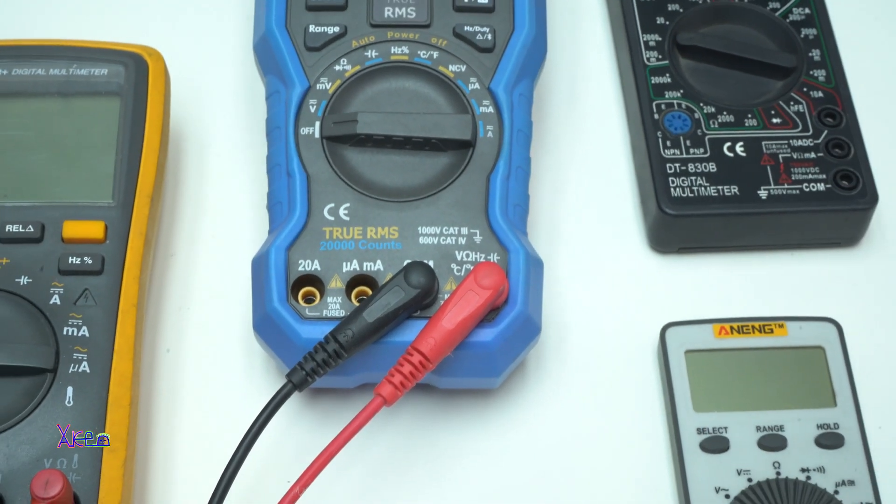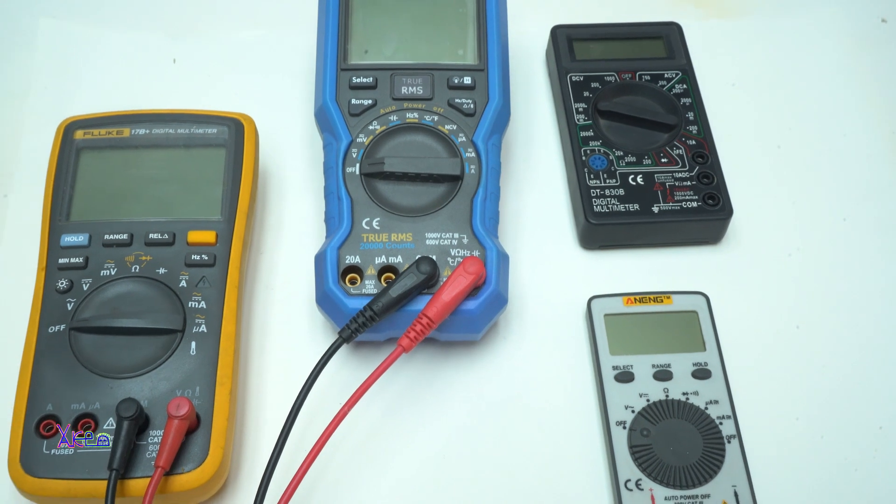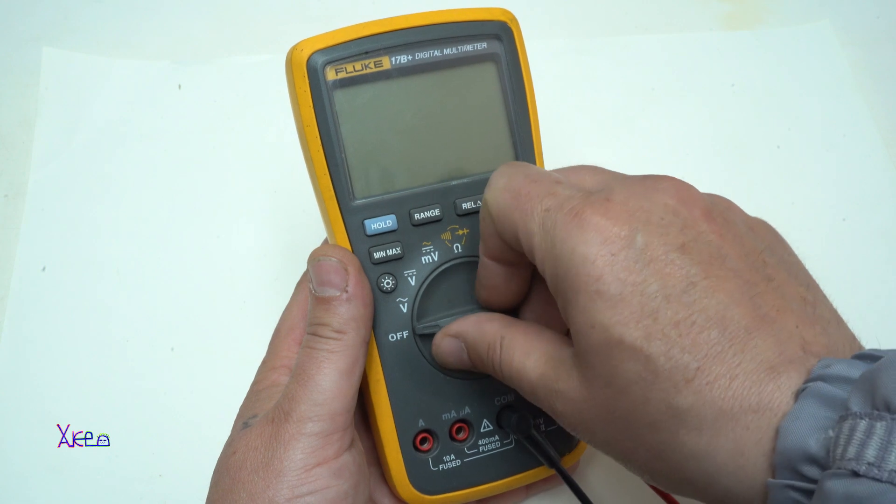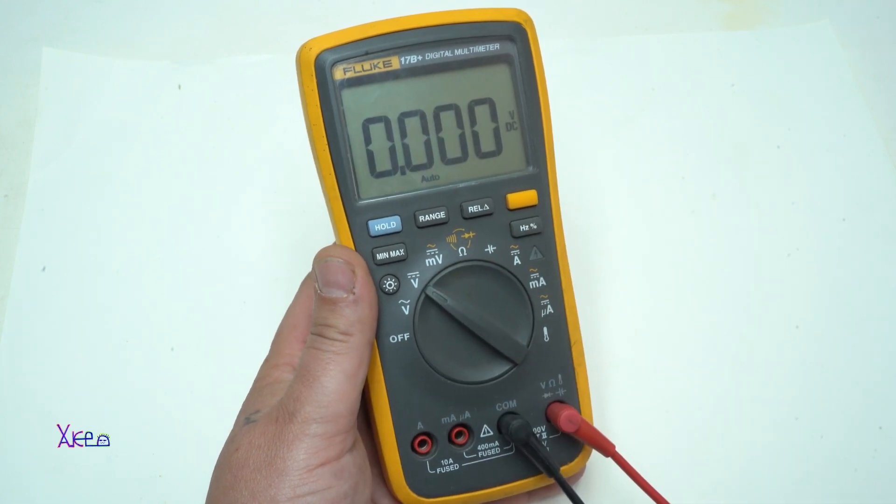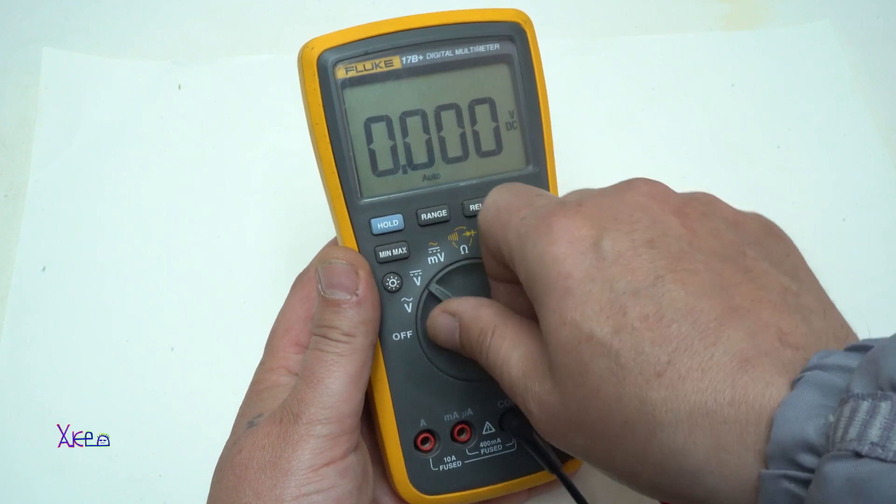Next, a digital multimeter. This tool allows you to measure voltage, current and resistance, and is indispensable for troubleshooting and testing circuits. Below this video I will put a link to my tutorial on how to use a digital multimeter.